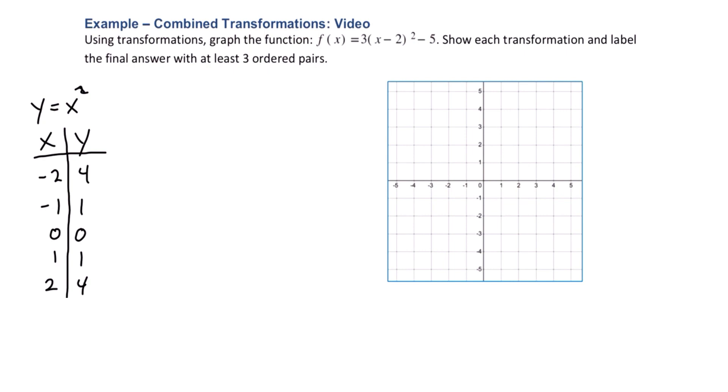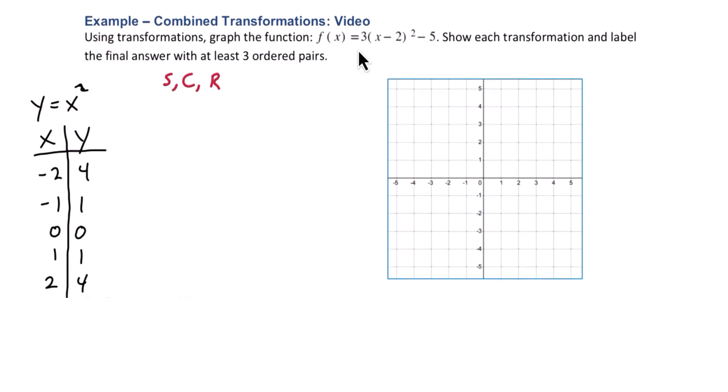And next we need to remember that there is an order to the steps when making transformations. The first thing we're going to do is we can do all stretches, compressions, and reflections at the same time. And looking at f, we have a 3. That's a vertical stretch. The others are going to be shifts. So this minus 2 and this minus 5 are shifts. So in this second step, the only thing we have to take care of is that vertical stretch.